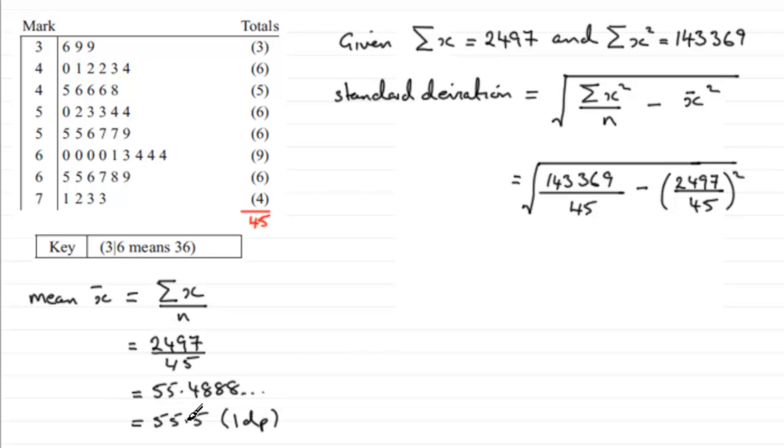Work this out, and what you get is 10.34219 and so on. Again, if we round this to one decimal place, it's going to be 10.3, to one decimal place. That brings us to the end of this part, and I hope you've been able to follow my workings there.